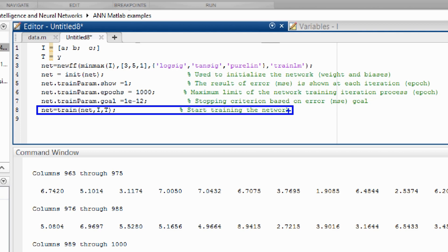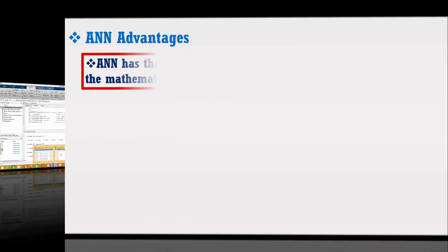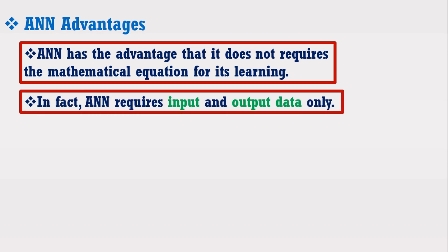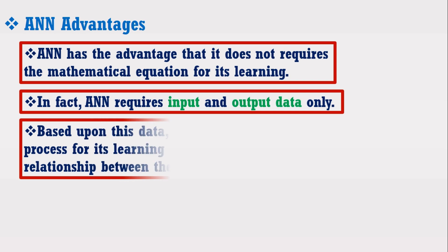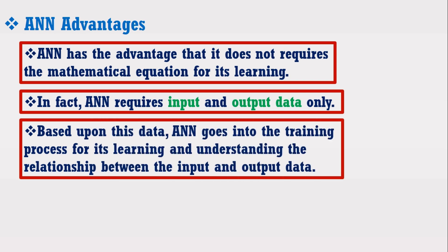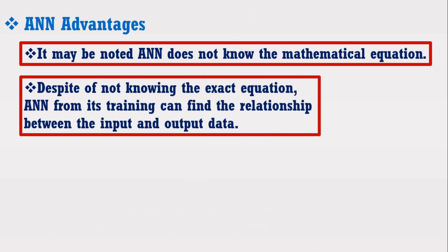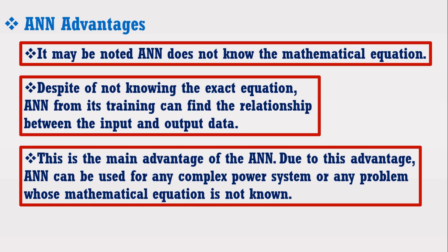I want to repeat the important point that ANN does not require the mathematical equation for its learning — ANN requires only the input and output data. From this data, ANN learns the behavior and relationship between the input and output variables. It may be noted again that we know the mathematical equation, but ANN does not. However, despite not knowing the exact equation, ANN from its training can find the relationship between the input and output data. This is the main advantage of ANN, which allows it to be used for any complex power system or engineering problem whose mathematical equation is not known.